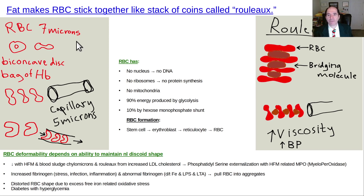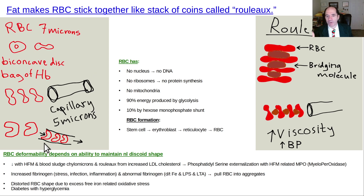A red blood cell is typically about 7 microns in diameter with a discoid shape — narrower in the center. The typical capillary is a little smaller, about 5 microns, so the red blood cell has to fold back on itself a little bit to pass through that capillary.